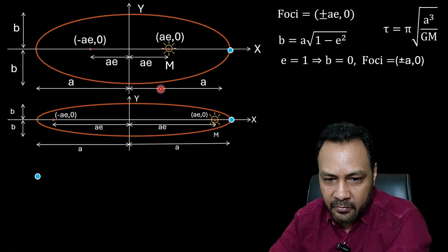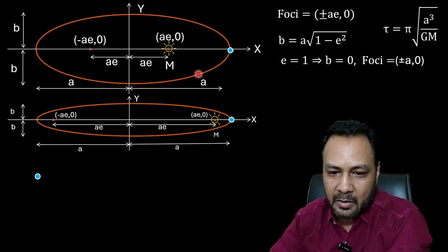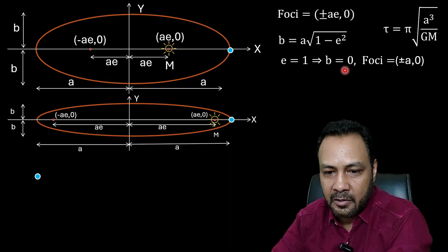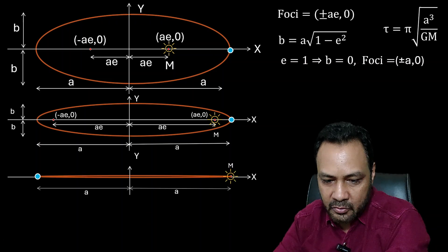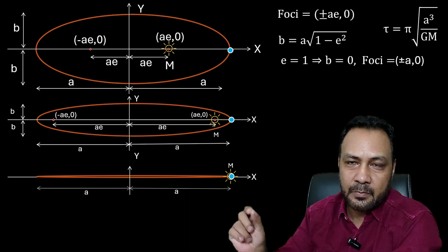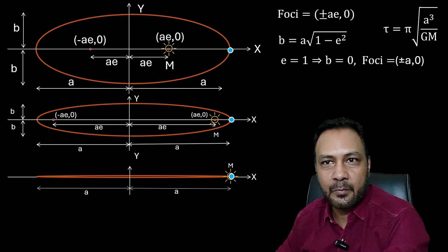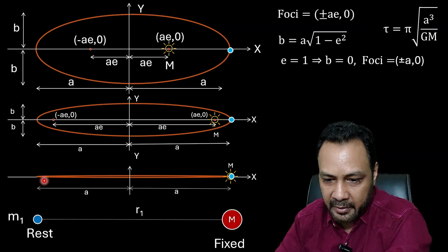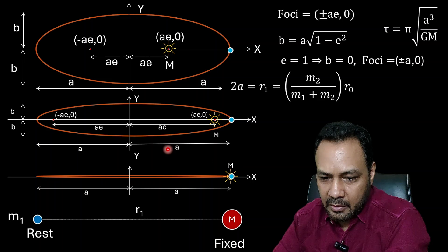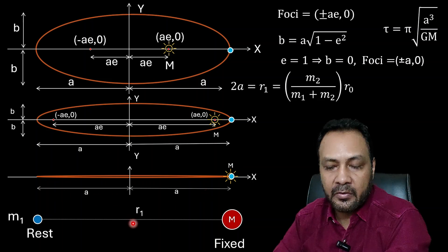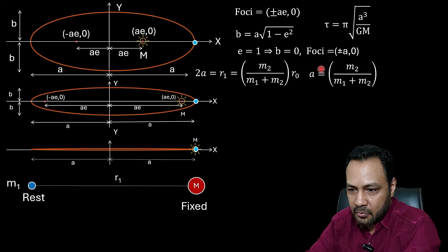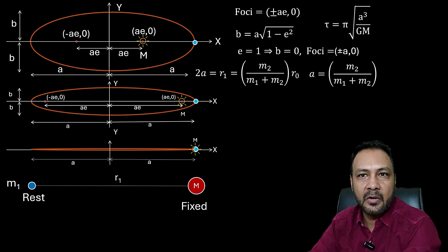Instead of the planet orbiting, as e increases to 1 and b becomes 0, the planet moves along a straight path — which is exactly the same as the case where mass M1 moves towards the fixed mass capital M. Comparing the two situations: 2a = R1 = (M2 / (M1 + M2))·R0, so a = (M2 / (M1 + M2))·R0 / 2.